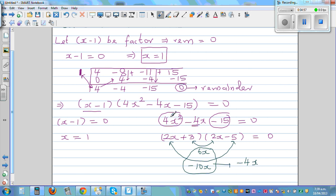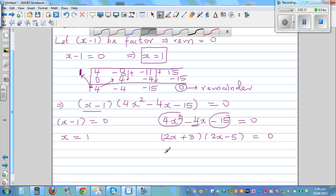So you can also check: 2x times 2x is 4x squared, 3 times minus 5 is minus 15, and this combination should also give you this middle term. So now you can set each of them equal to 0. You can say 2x plus 3 equal to 0, or 2x minus 5 equal to 0.